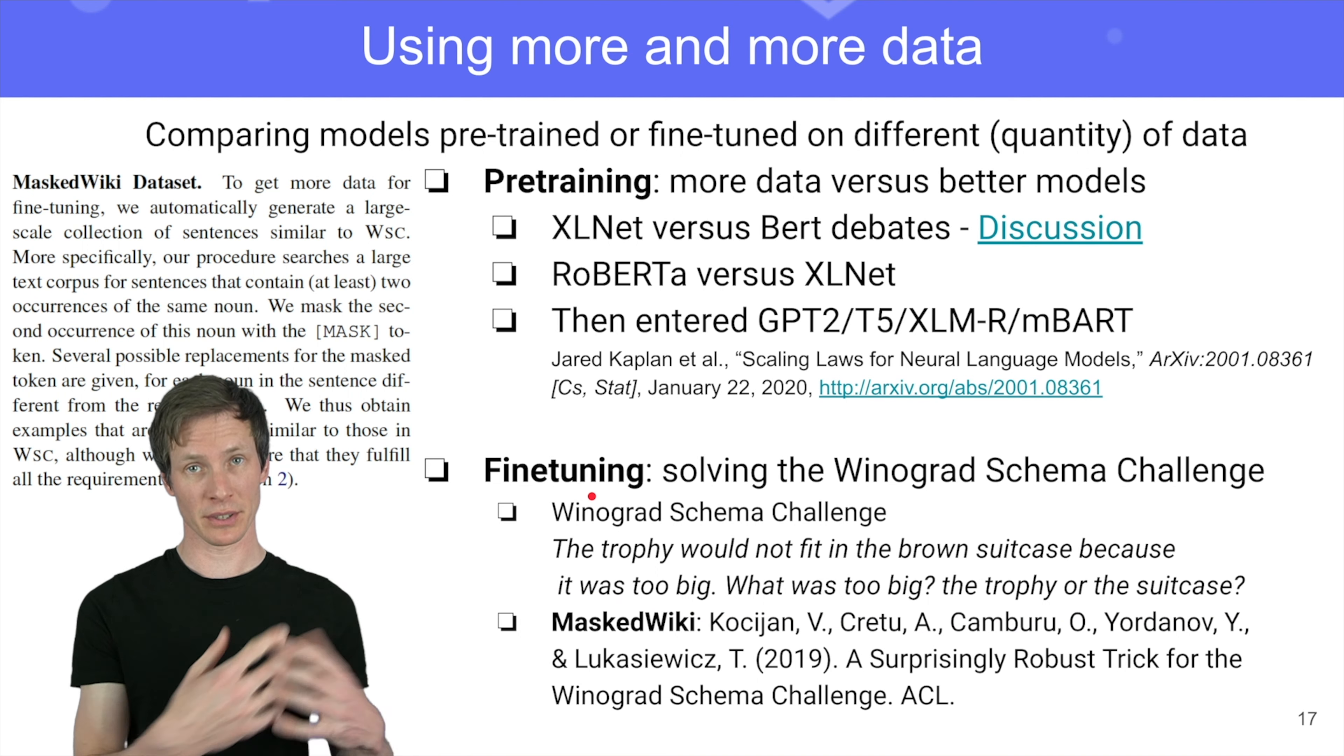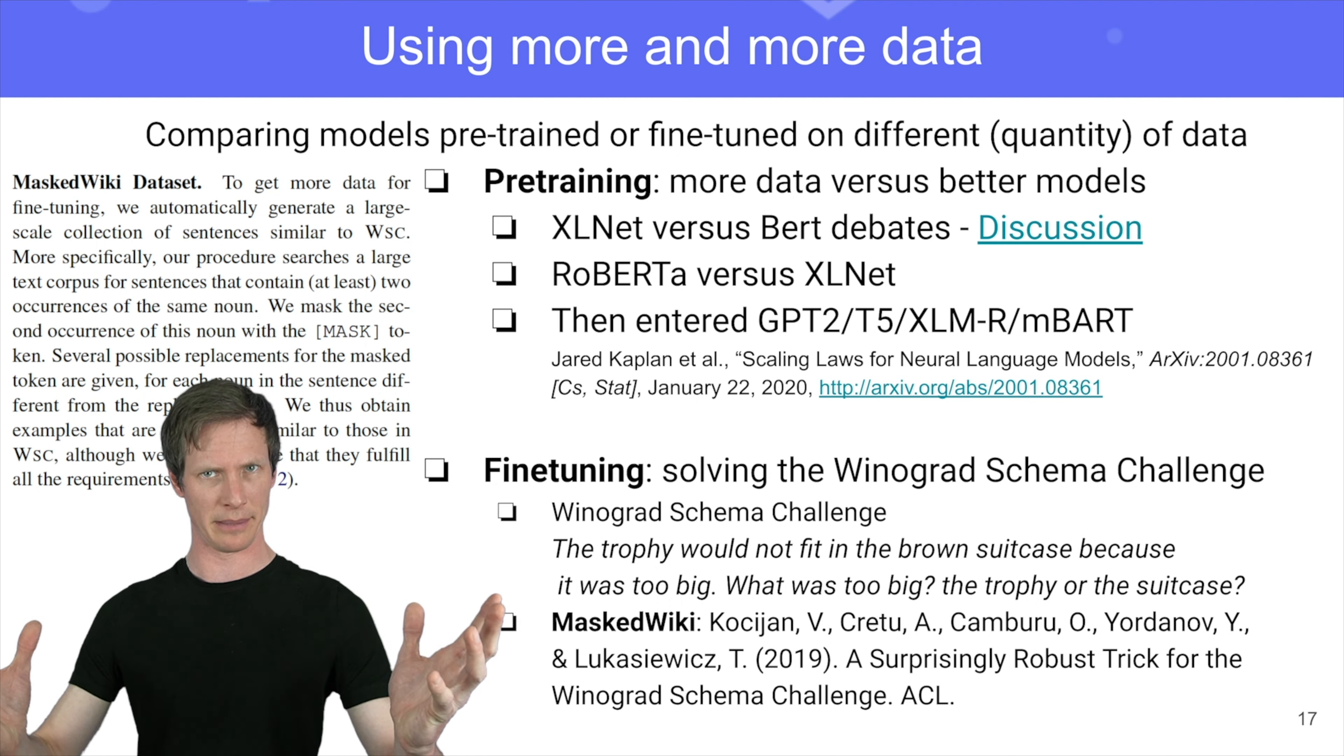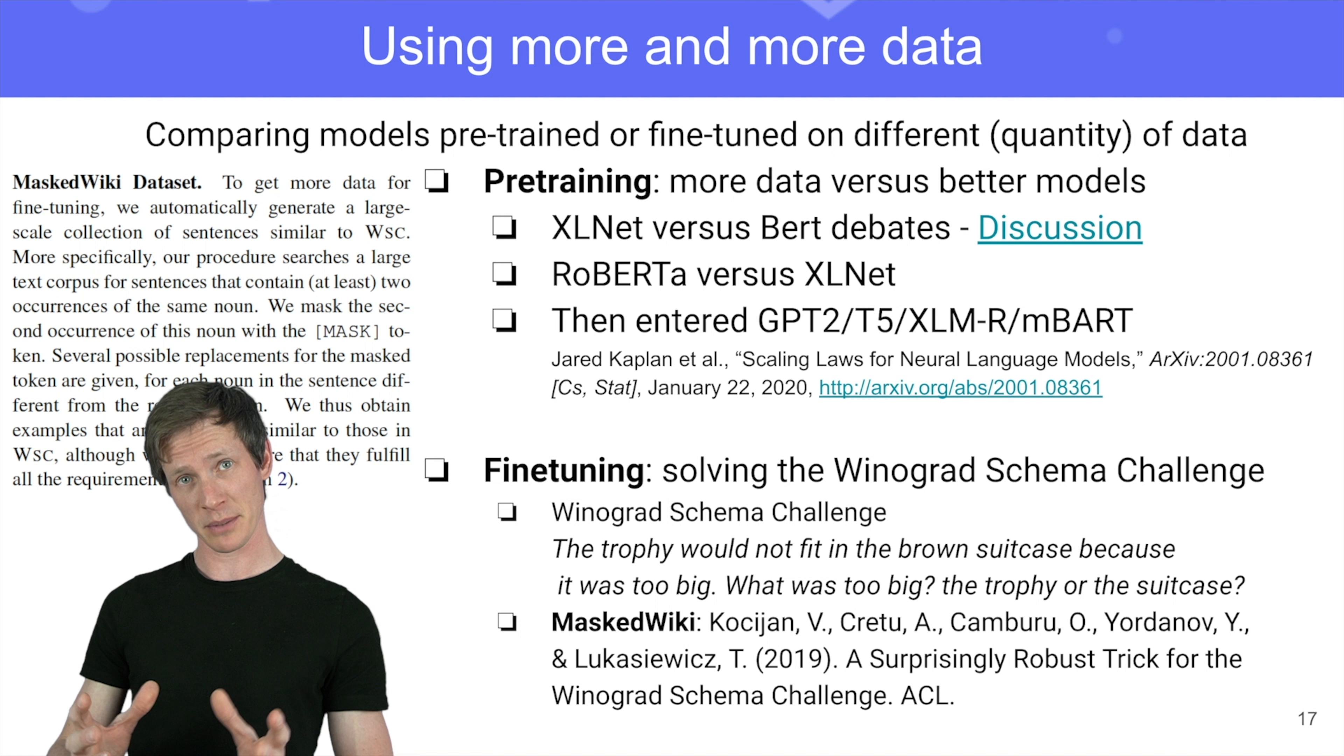And the question is, what was too big? Was it a trophy or was it a suitcase? And the model has to do a classification between these two ones. So that's very interesting because you need some common sense. You need to know that suitcase is usually bigger than a trophy. And the way it was solved, for a long time it was a very hard challenge. It's a very small one. You only have like 300 examples, and for a long time it was very hard to get good performances for deep learning models on that.